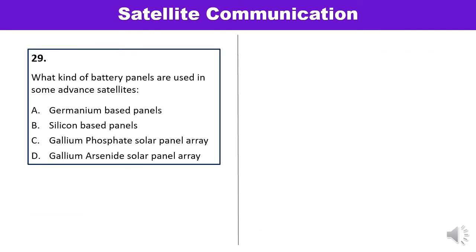Question 29: What kind of battery panels are used in some advanced satellites? The battery panels used in advanced satellites are gallium arsenide solar panel arrays. These panels are also to be used in future space missions. Answer D is correct.